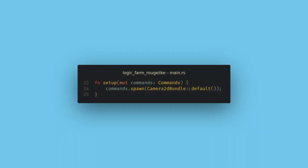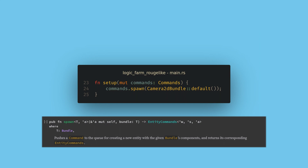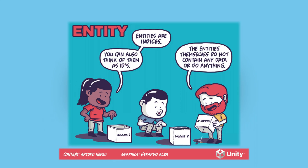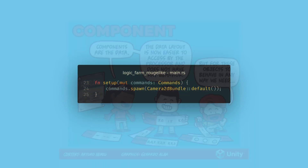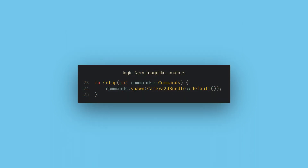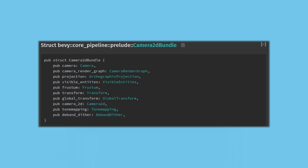The first thing we want to do with our commands is spawn a camera. Without a camera, nothing will be visible and we will always have a black screen. The spawn command takes a bundle of components to create a new entity. In ECS, entities are the actual game objects in our world — they are just a simple ID number and hold no data by themselves. The data in ECS is held by components.